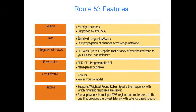Route 53 is also very fast — changes propagate quickly across the edge network. For example, if you add a domain name now and link it with an IP address, that association will be propagated to all edge locations. So if you add it from India, someone trying to access that website from the US will also be able to access it.